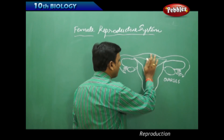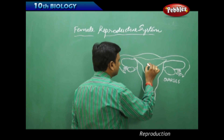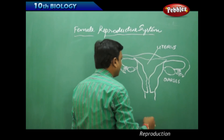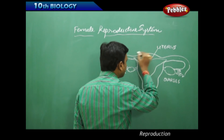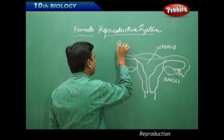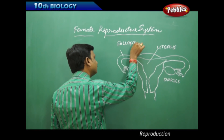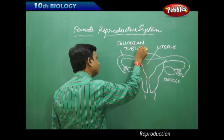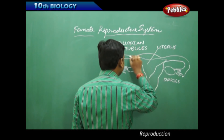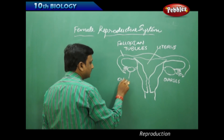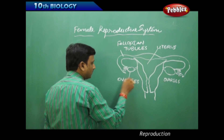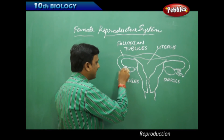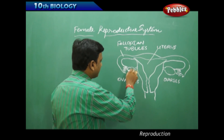There is a muscular bag-like part called the uterus. It has two side tube-like structures called fallopian tubules, and here they have the ovaries. The fallopian tubules end with a funnel-shaped ending, where they are connected to the ovary.